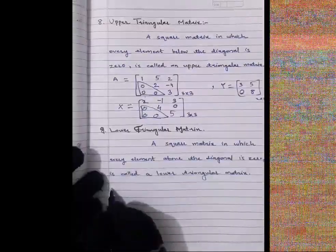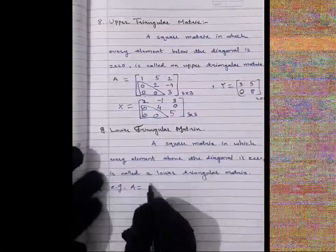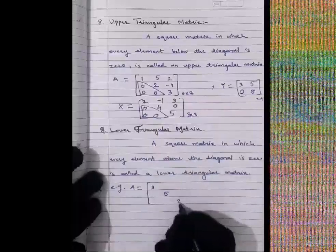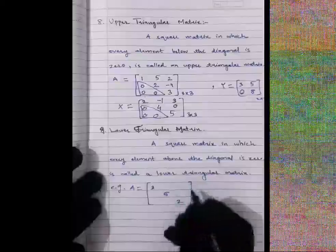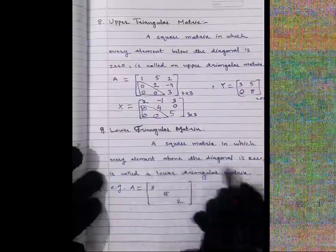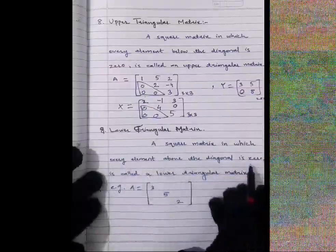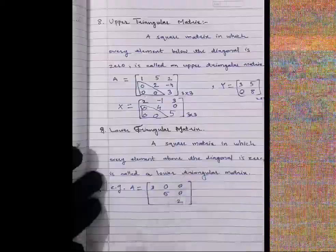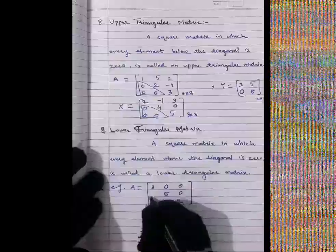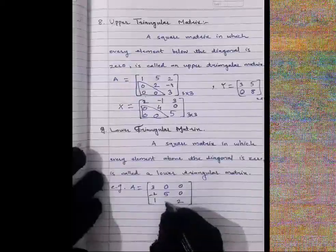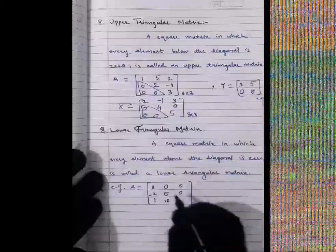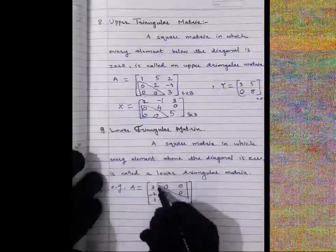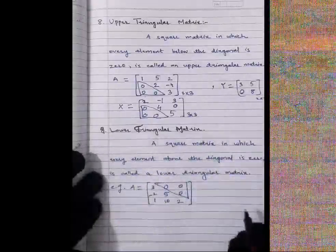Example: matrix A equals a 3×3 matrix with diagonal elements 3, 5, 2, all elements above the diagonal equal to zero, and below-diagonal elements minus 2, 1, 10 (any values). This is called a lower triangular matrix of order 3×3.